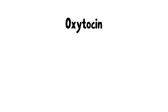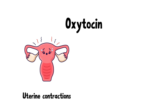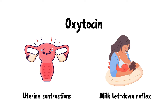Oxytocin stimulates uterine contractions during labor and also plays a part in the milk letdown reflex — that is, when a baby begins suckling, milk is ejected within about 30 seconds to 1 minute.